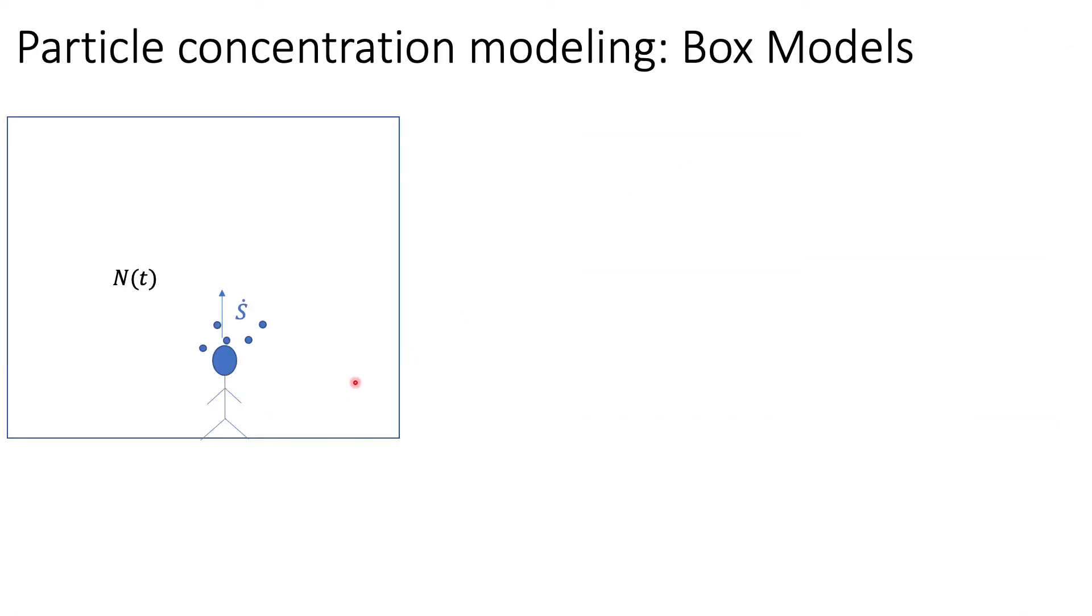My interest here is to understand what the fate of aerosol would be in a room. I'm going to consider this room as a box, so we'll call these box models. I'll have to consider the injection rate of the particles from a source, could be a person. We'll also consider the injection of flow through the ventilation system and the removal back to the ventilation system. In addition, these particles could be lost to the walls due to diffusion or gravitational deposition or could be resuspended back as a person walks around.